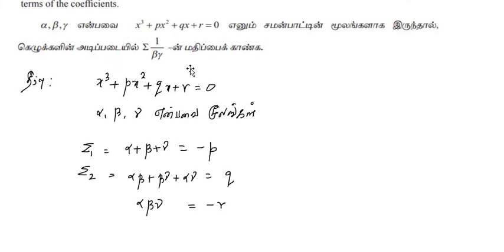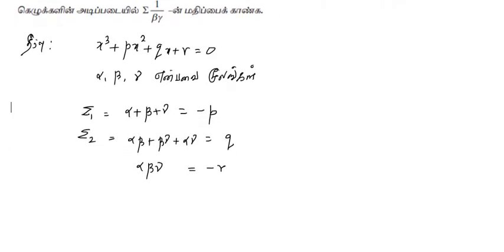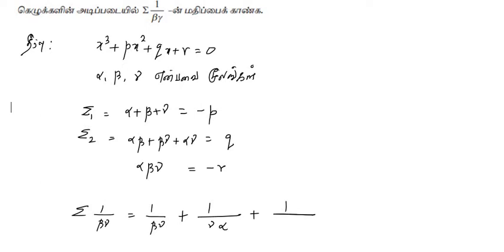Now, the question is sigma(1/βγ). Let's expand. Sigma(1/βγ) means the sum: 1/(β·γ) plus 1/(γ·α) plus 1/(α·β). With the combination, the denominator is alpha·beta·gamma. In the first term we have beta and gamma, so the numerator and denominator give us alpha over alpha·beta·gamma.